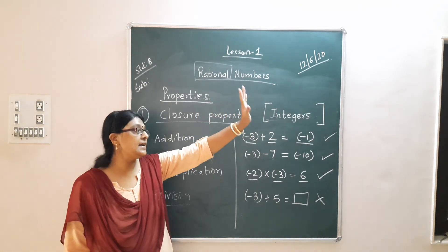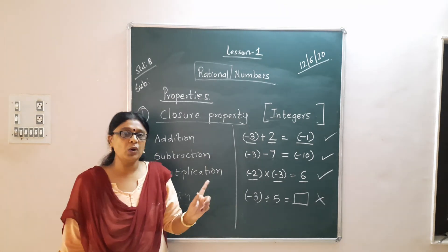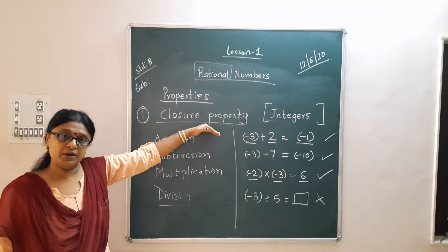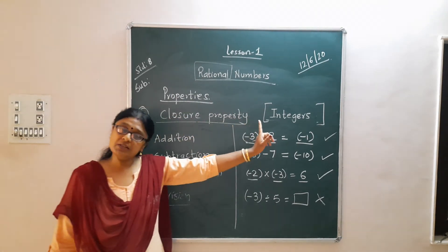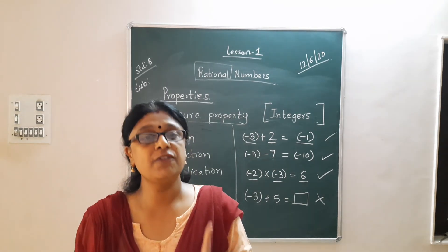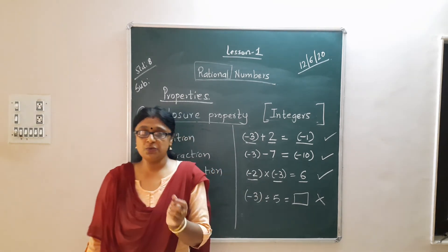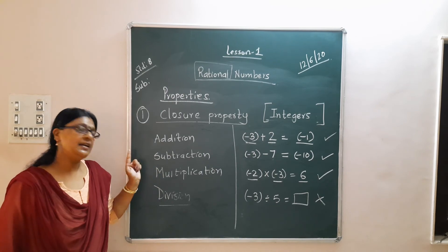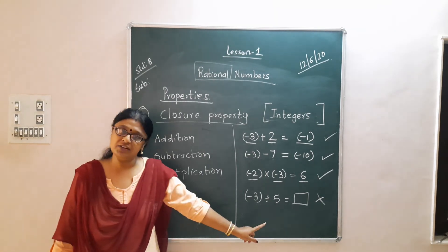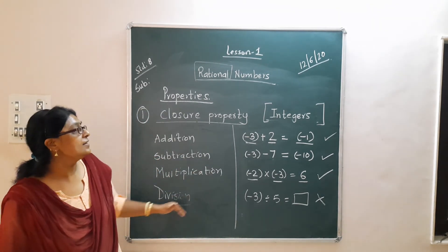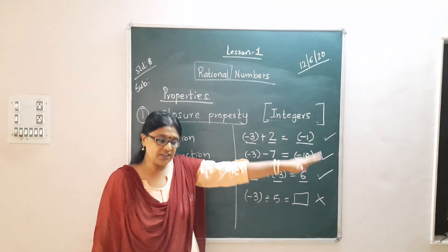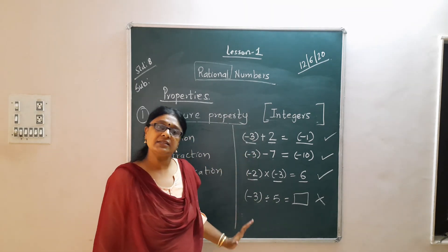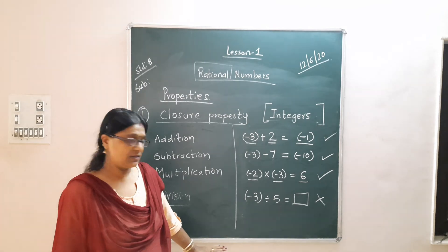The difference between whole numbers and integers is that integers include negative numbers, but whole numbers do not. So today we studied closure property for whole numbers and integers. For whole numbers, it is true for addition and multiplication, and not true for subtraction and division. For integers, it is true for addition, subtraction, and multiplication, but not true for division. Tomorrow we will continue with closure property for rational numbers. Please go through today's chapter so that when we continue the lecture, you are clear with all these ideas. Thank you.